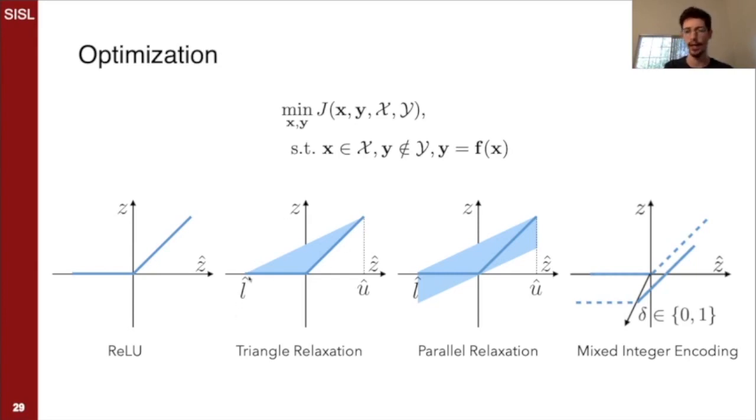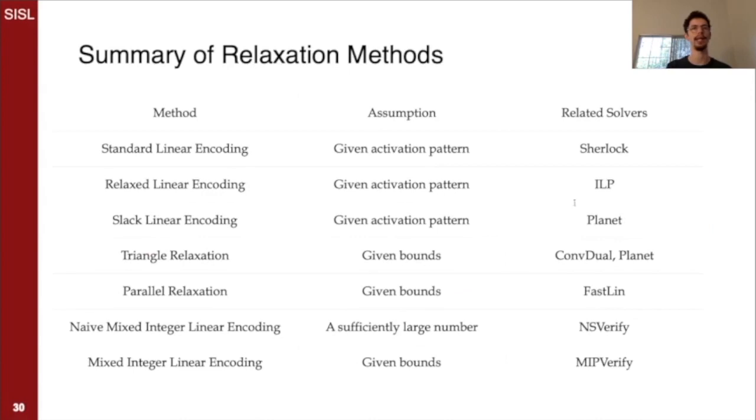So what we tend to do is relax it in some way, either this triangular relaxation which is convex, or a parallel relaxation also convex. Or we could use a mixed integer encoding to switch off which branch of the ReLU we are in. And the different algorithms use different approaches in terms of what encoding we use, and they trade off precision, scalability, and so on.